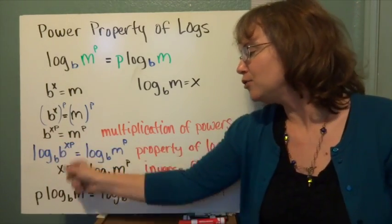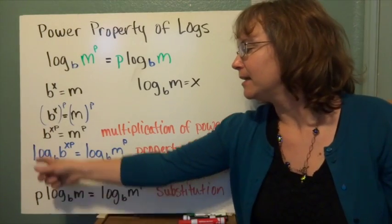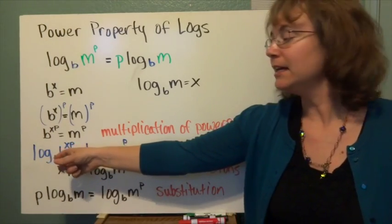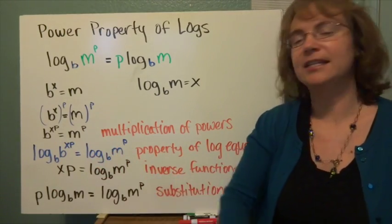Undoing it using the inverse functions, I just have xp. Log base b of b just undoes each other. So I have xp equals log base b of m to the p.